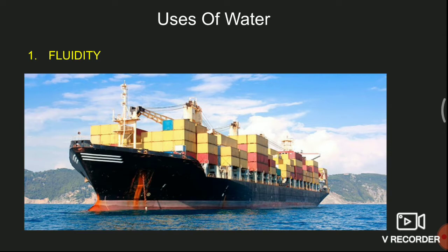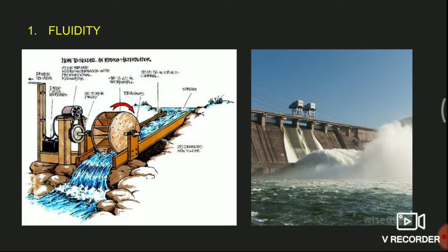The first use is fluidity. Water is useful for water transport due to its fluidity property — that is in water cargo, ship carrying passengers, etc. Also, water falling down from a height is used to generate electricity with the help of a generator.